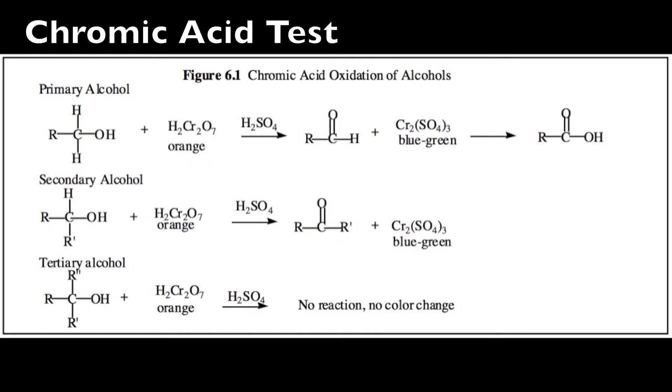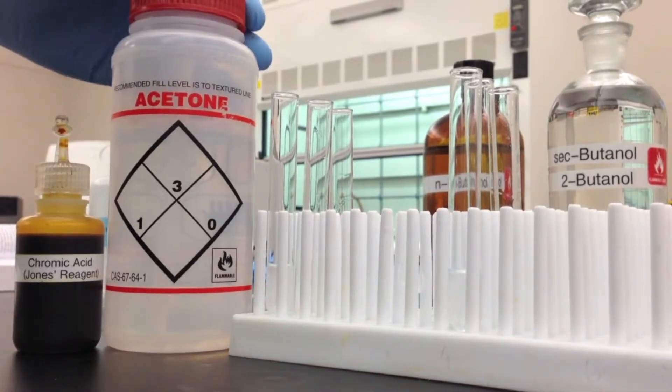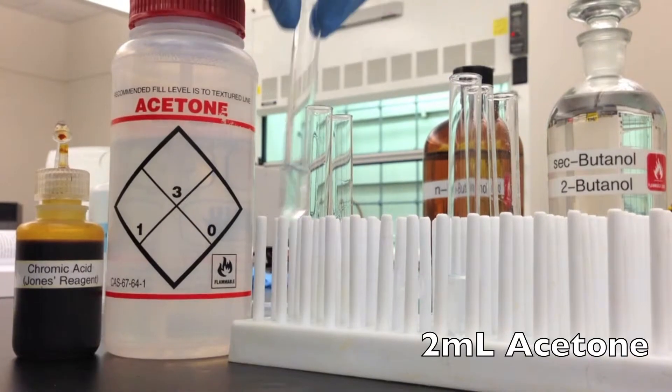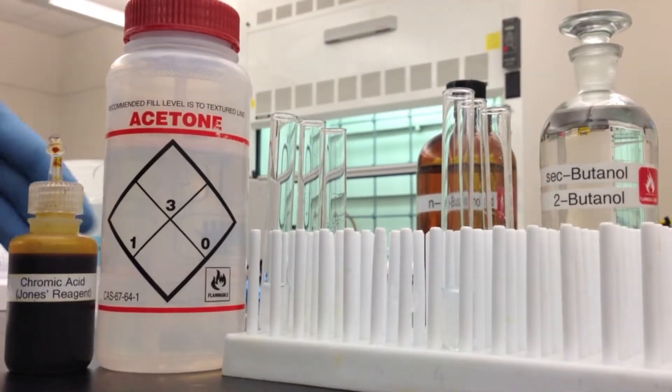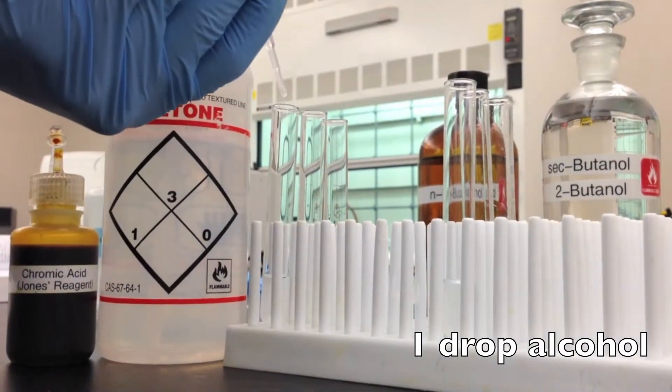Okay, so this is our third test, the chromic acid test. Now to begin, you want to add roughly two milliliters of acetone to each of the test tubes. And then you want to dissolve one drop of each reagent.